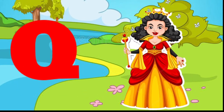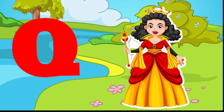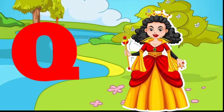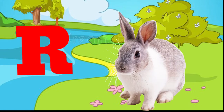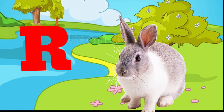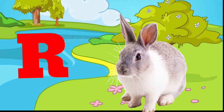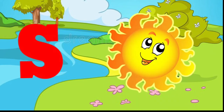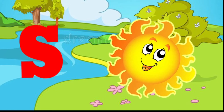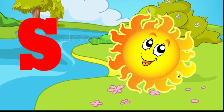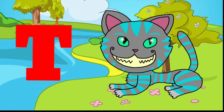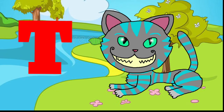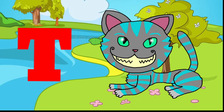Q is for queen, kw-kw-queen. R is for rabbit, r-r-rabbit. S is for sun, s-s-sun. T is for toad, t-t-toad.